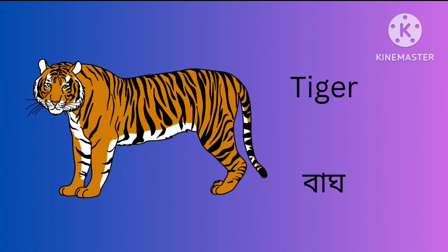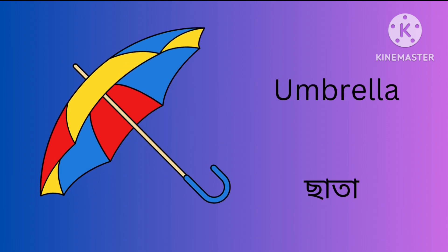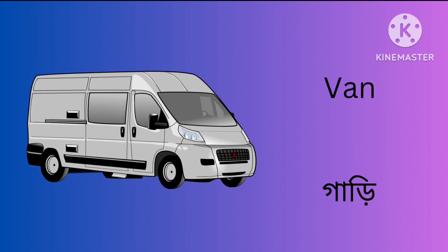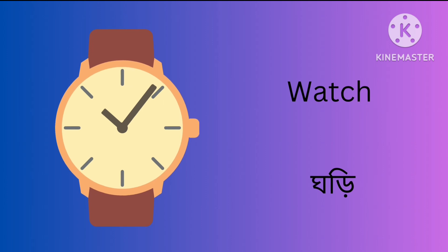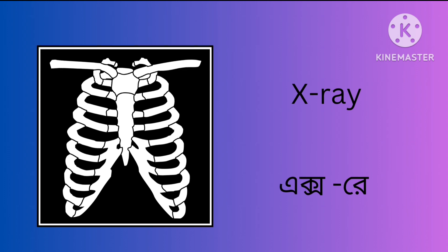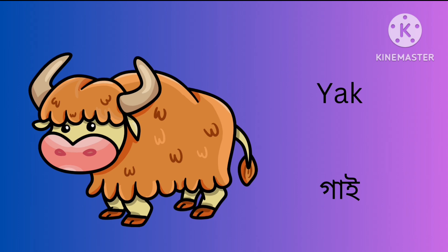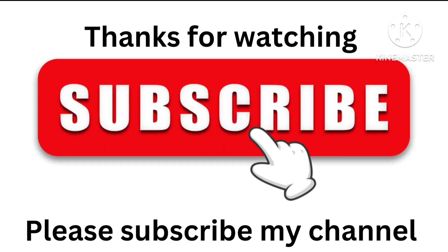T for Tiger. U for Umbrella. V for Van. W for Watch. X for X-Ray. Y for Yak. Z for Zebra. Thanks for watching, please subscribe to my channel.